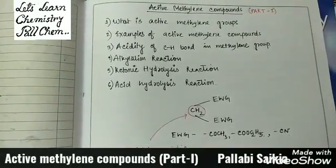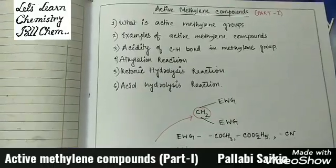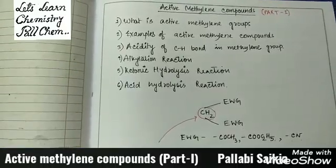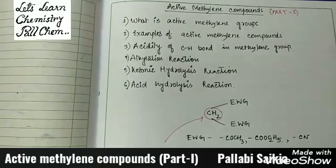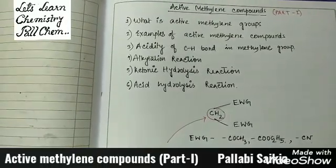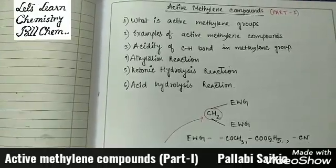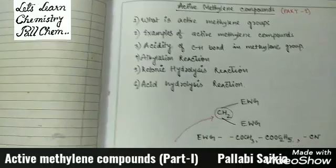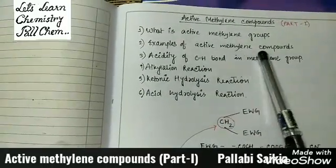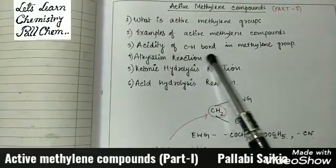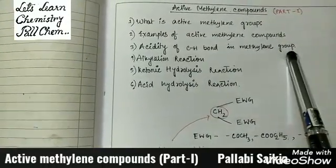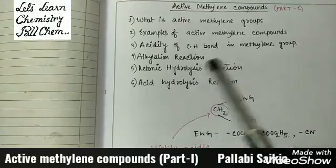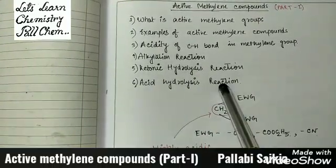Dear students, in this video some aspects of active methylene compounds will be discussed in three parts. In part one we are going to discuss: (1) what is active methylene groups, (2) examples of active methylene compounds, (3) acidity of CH bond in methylene group, (4) alkylation reaction, (5) ketonic hydrolysis reaction, and (6) acid hydrolysis reaction.